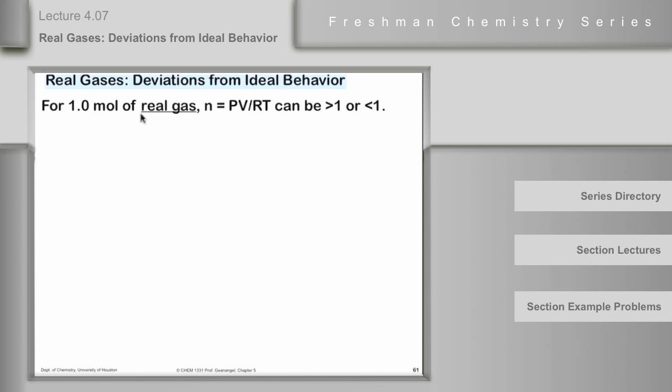If you take one mole of a real gas, you'd expect an ideal gas - if you picked up one mole of it - then PV over RT would be equal to one, right? But in a real gas, it can actually be greater than one or less than one. And the kinetic molecular theory explains the deviations, either upwards or downwards.